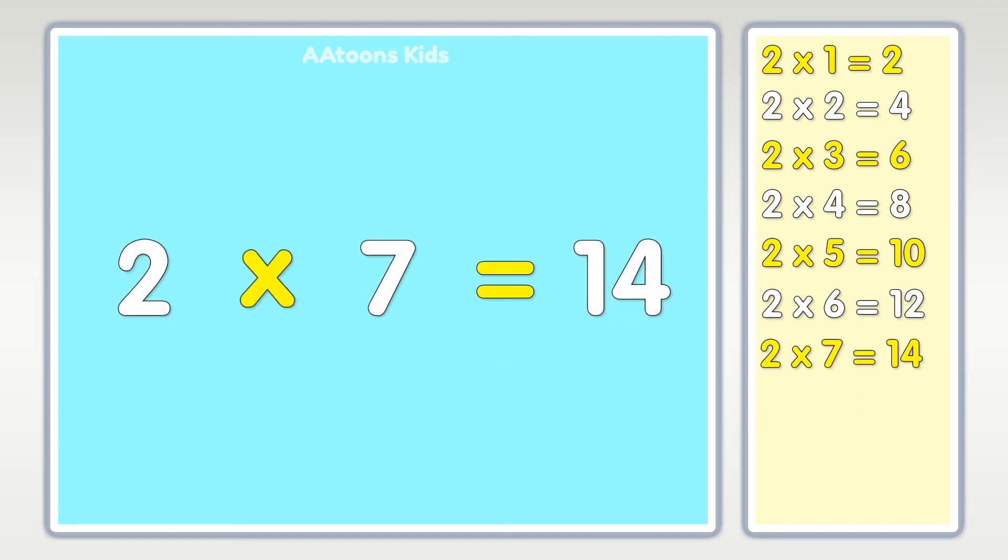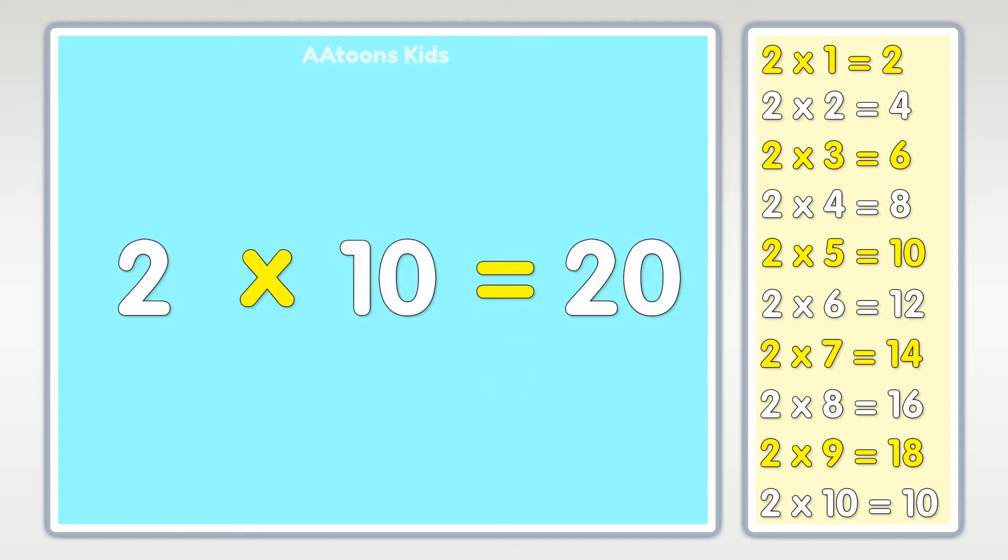Two times seven is fourteen, two times eight is sixteen, two times nine is eighteen, two times ten is twenty.